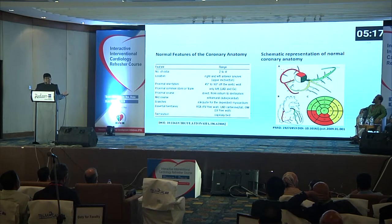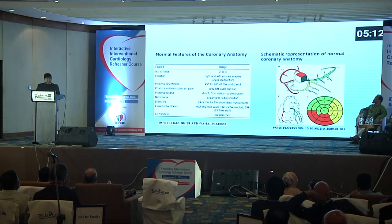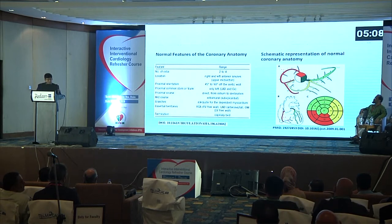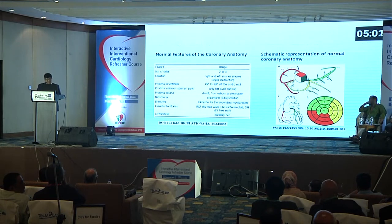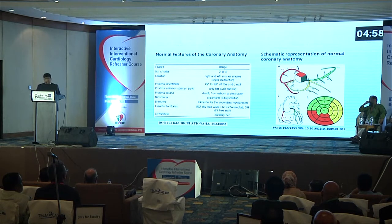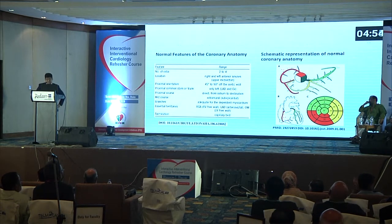Before going into the main part, I want to show some features of the normal coronary artery. It has usually 2 to 4 ostiums, and the normal course is extramural, and branches are delineated easily. The schematic diagram shows the orientation of the coronary arteries.